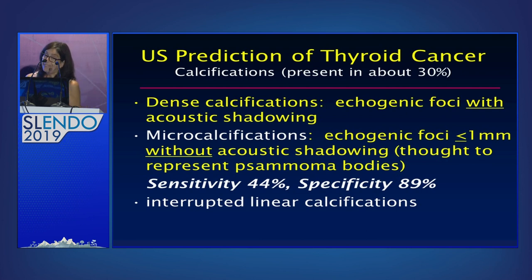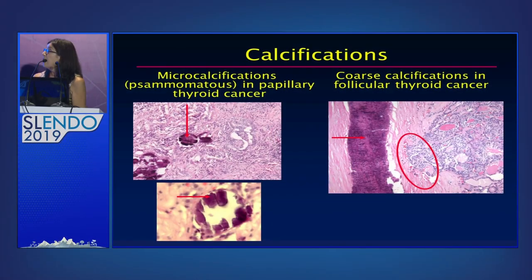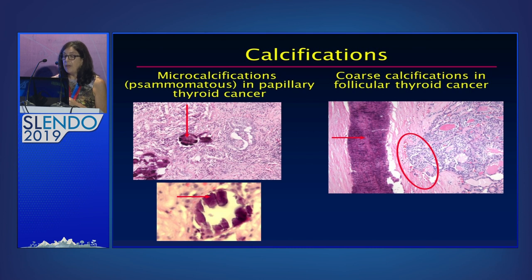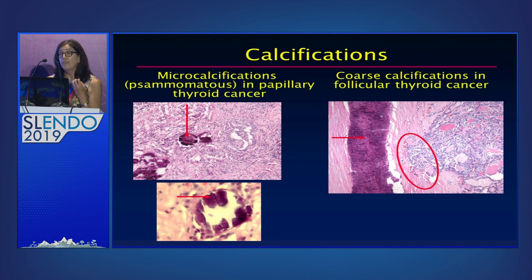Microcalcifications are not very sensitive because many cancers don't have them, but they are quite specific — it's unusual to see a benign nodule with them. We can also have another calcification suspicious for malignancy called the interrupted linear calcification. Pathologically, these are psammomatous calcifications in a papillary cancer. On the right is a follicular carcinoma with a linear calcification surrounding the outside, and we know it's a follicular carcinoma because you can see the invasion of follicular cells into the capsule — which is what capsular invasion means to our pathologists.